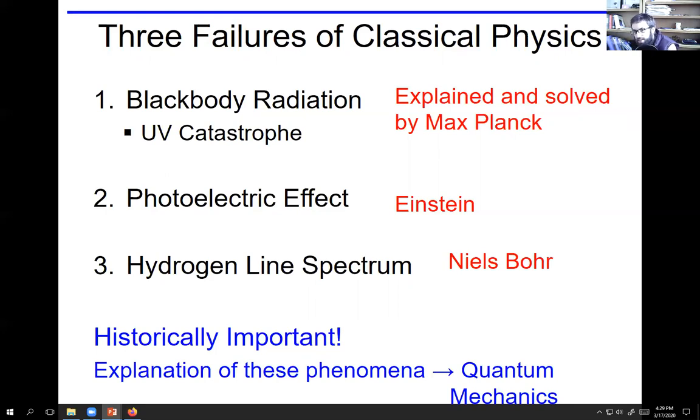Those were blackbody radiation, which was explained by Max Planck; the photoelectric effect, explained by Einstein; and the hydrogen line spectrum, explained by Niels Bohr. The explanation of all these things led to what is known as quantum mechanics, which is currently the best approximation of how fundamentally the universe works. Theories are broad ranging sets of observations and hypotheses that together form the best approximation for reality, and it's always going to be approximation. That's where we are with quantum mechanics.